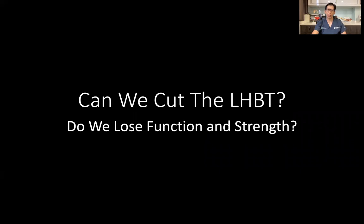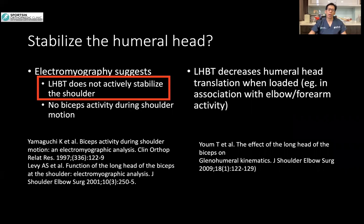The question for this debate is: can we cut the long head biceps tendon — do we actually lose function and strength? Regarding function, it has long been suggested that the biceps is a humeral head depressor and stabilizes the shoulder during motion. However, electromyographic studies showed that the long head biceps tendon does not actively stabilize the shoulder. When the elbow was taken out of the equation, there was hardly any electromyographic activity on active shoulder motion. The long head biceps tendon does seem to decrease humeral head translation when loaded — for example, when the elbow is in flexion or being used — which may provide some shoulder stability during loaded elbow activities.